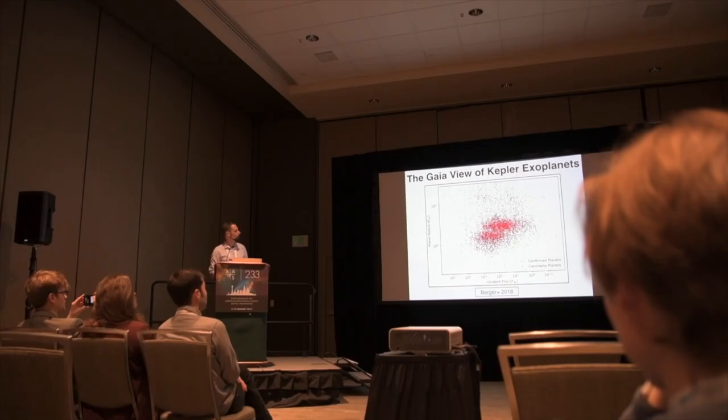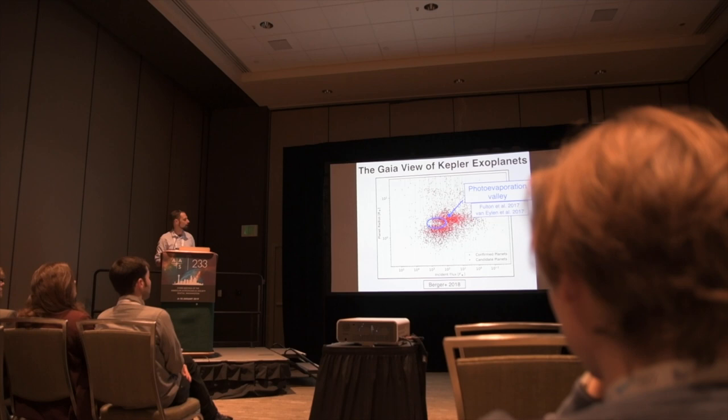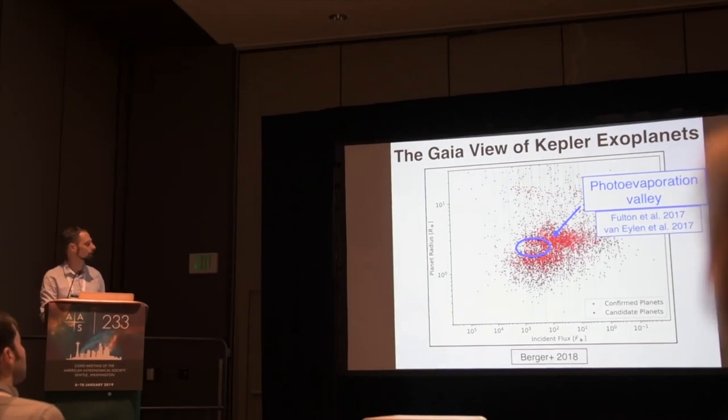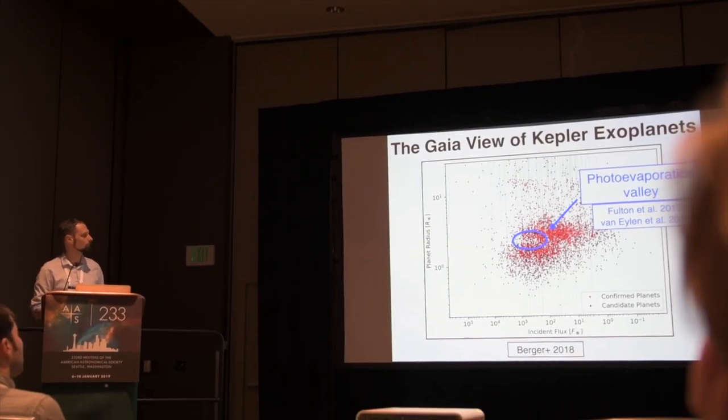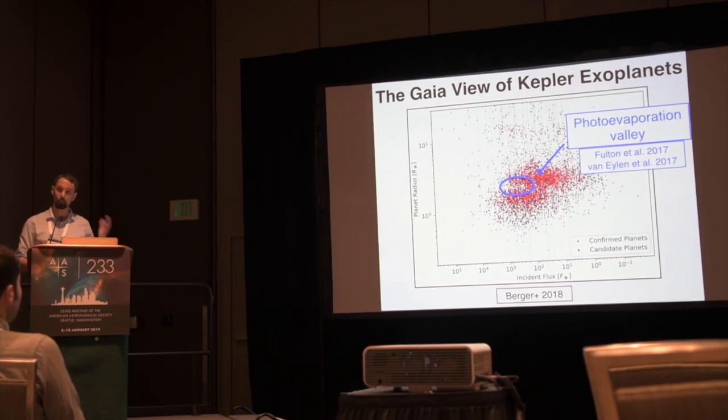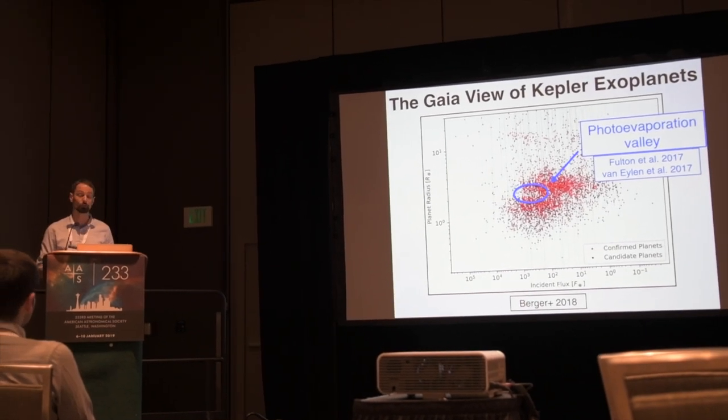If you have students who want to do this, there are lots of new packages to help your students get started with the data, get started finding planets, and get started fitting transits. The most obvious one is this gap — the gap in the radius distribution of small planets, which we believe is due to photoevaporation, that was actually discovered prior to Gaia DR2.